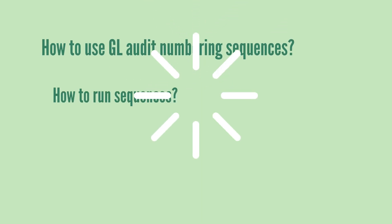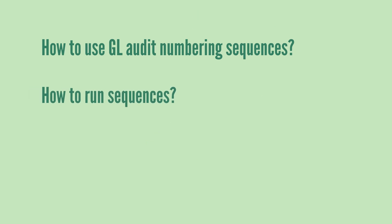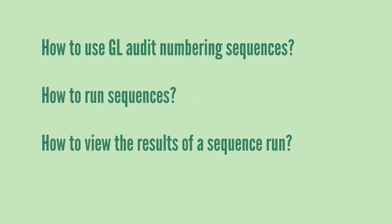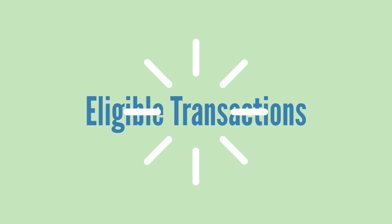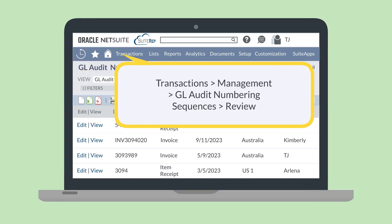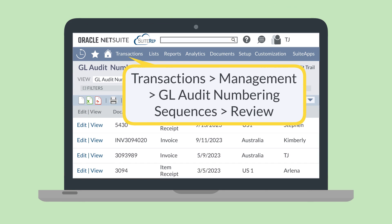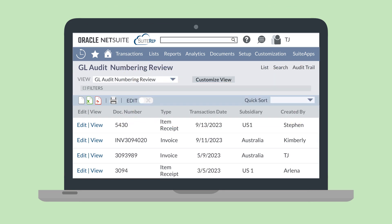After you create sequences, how would you use them? First, you can see which transactions are even eligible for GL audit numbering by navigating to Transactions > Management > GL Audit Numbering Sequences > Review. On this page, you can filter to an accounting period to see all the transactions for that period that the numbering sequence would apply to.